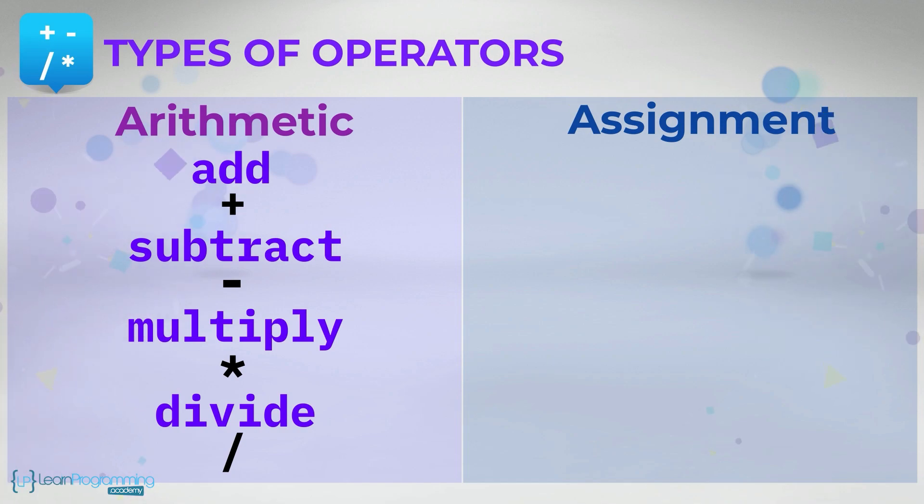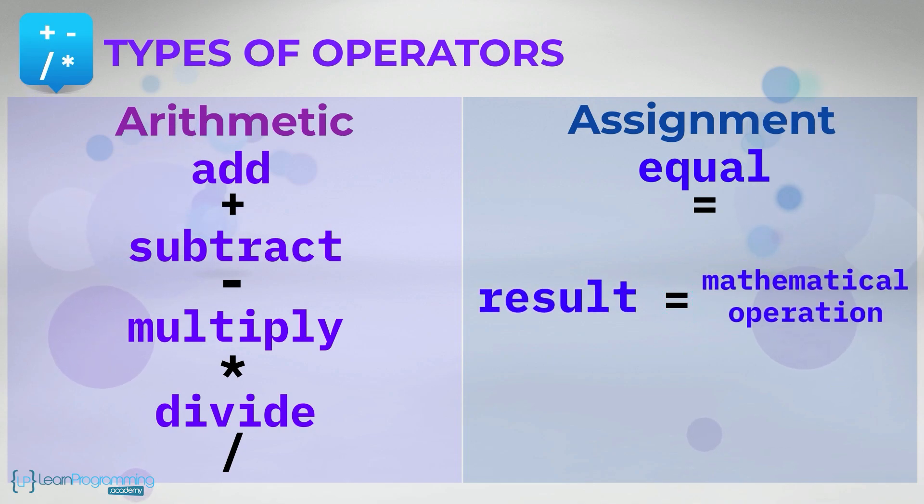The assignment operator is the equal symbol, and is generally used to communicate that a result will be computed by completing the mathematical operation on the right hand side of the equal sign, and place the result into a symbolic memory location on the left side of the equal sign.